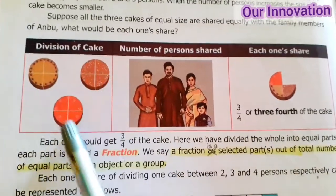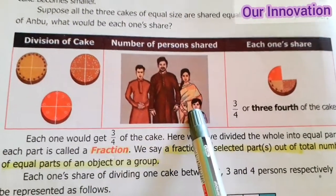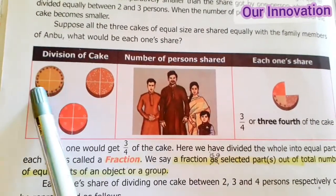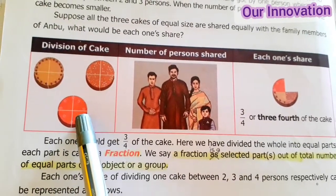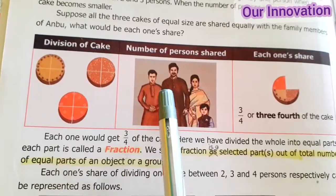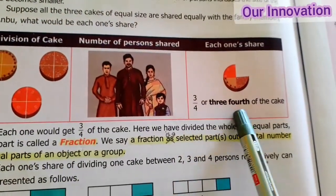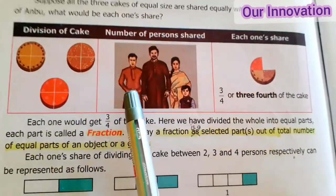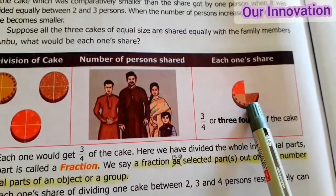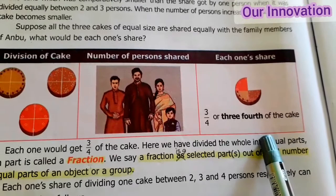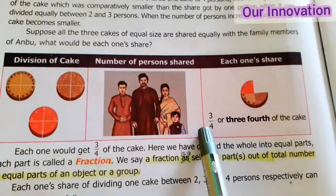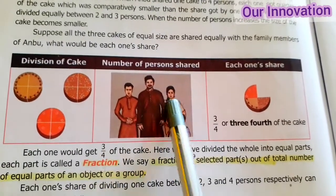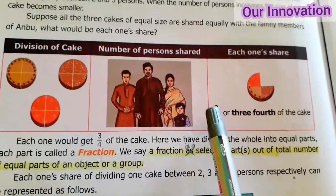Here we have 3 cakes — 1, 2, 3 — and 4 persons — 1, 2, 3, 4. Cut each cake into 4 pieces: 1, 2, 3, 4. So 4 pieces per cake. Each person gets 1 piece from each cake, so 3 pieces total out of 4. That is 3 by 4 — three fourths of the cake. So 3 by 4 is the fraction.